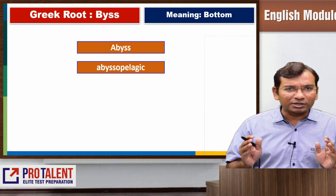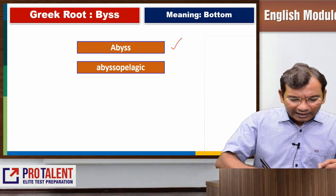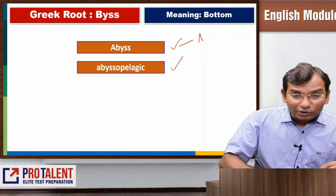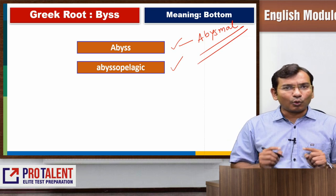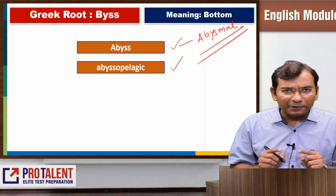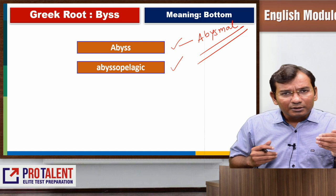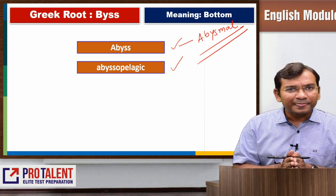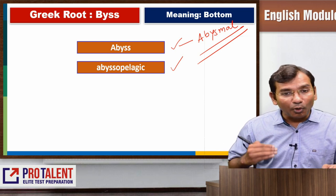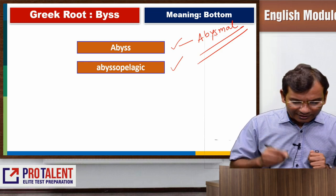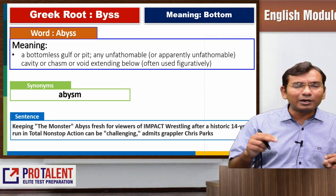Let me start to talk about the first root called Bees. Bees means bottom. From there, there are two words we are discussing: one is called Abyss and Abyssopelagic. From Abyss we can also talk about another word called Abysmal. Abysmal performance means any performance which has gone to the bottom — it has gone to a very zero level. Afghanistan cricket team had an abysmal World Cup 2019. They were at the bottom while India was at the top. So this is a Greek root Bees meaning at the bottom, and from there there is a word called Abyss.